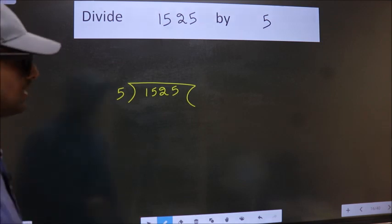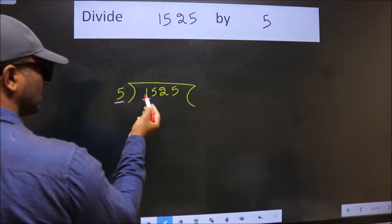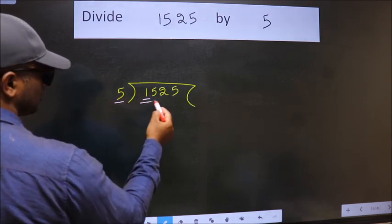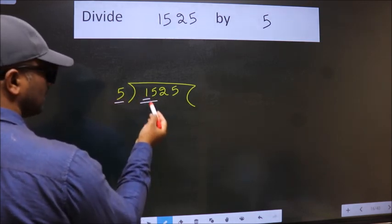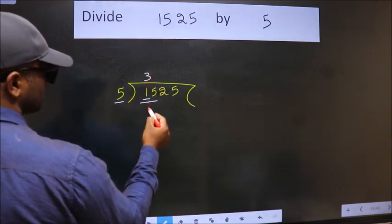Next, here we have 1, here 5. 1 is smaller than 5, so we should take two numbers: 15. When do we get 15 in the 5 table? 5 times 3 is 15.